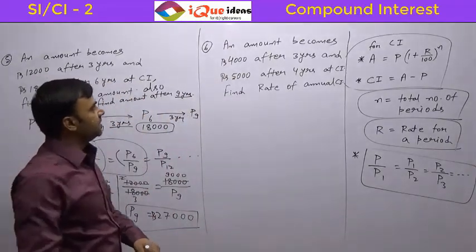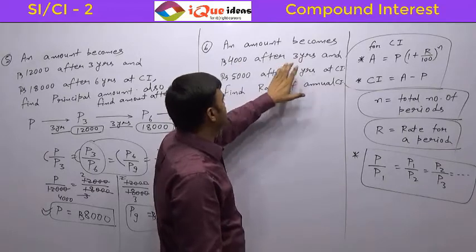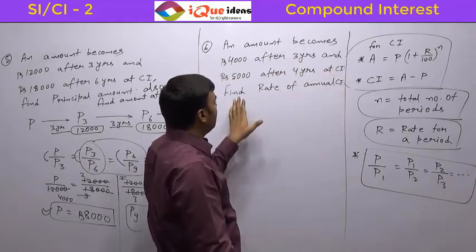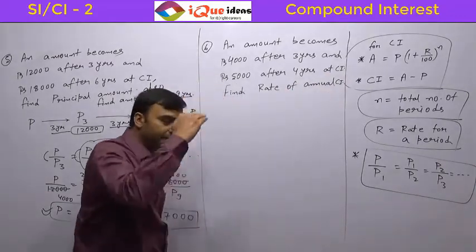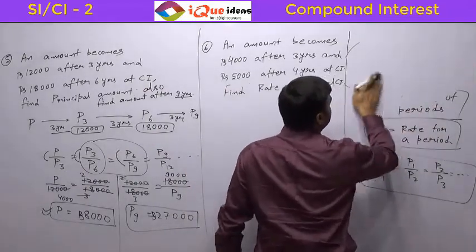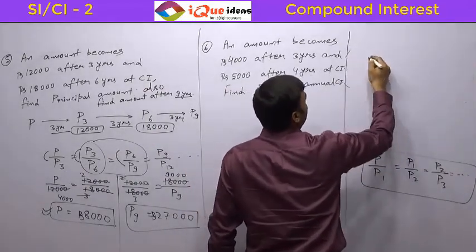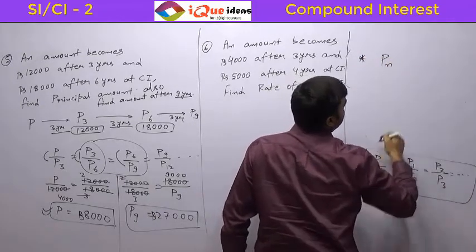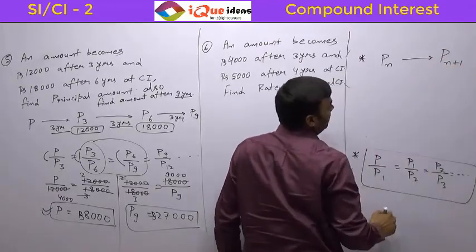Now let us take this question. It says an amount becomes Rs. 4,000 after 3 years and Rs. 5,000 after 4 years at compound interest. Find the rate of annual compound interest. We have a rule: for the Nth year the amount is PN, and for the N+1th year the amount is PN+1.